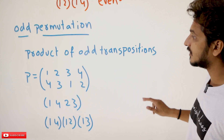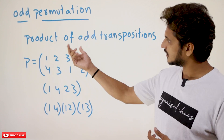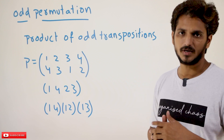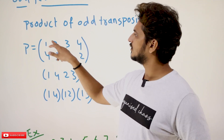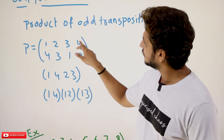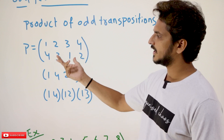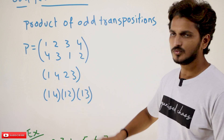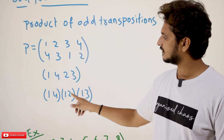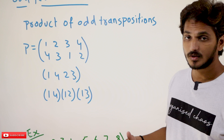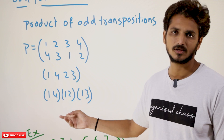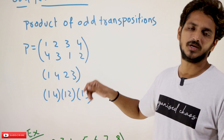Similarly, an odd permutation is one where the permutation can be expressed as the product of an odd number of transpositions. Take P: 1→4, 2→3, 3→1, 4→2. This can be written as the cycle (1 4 2 3), and written as transpositions: (1 4)(1 2)(1 3) — three transpositions, which is an odd number. So this is an odd permutation.